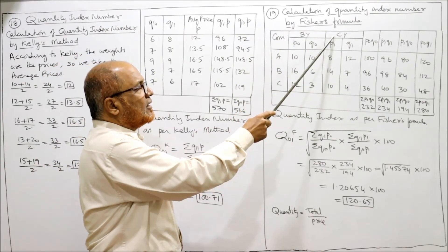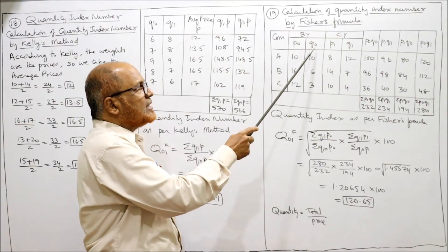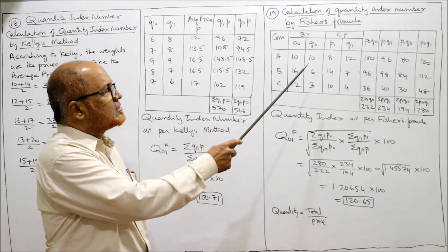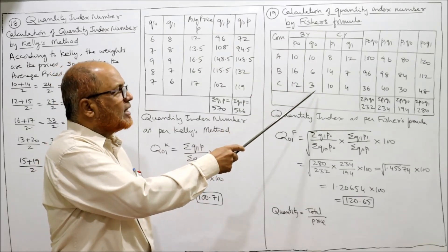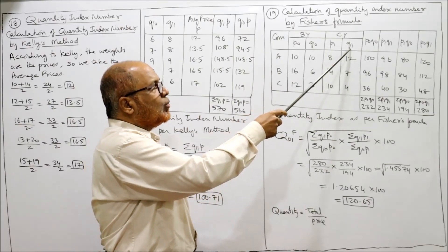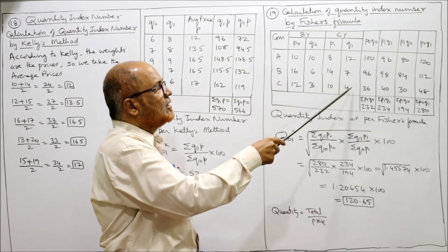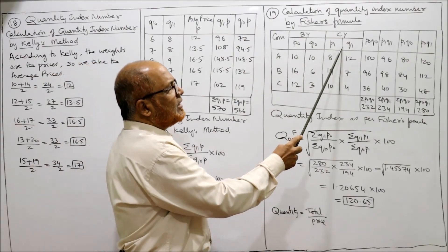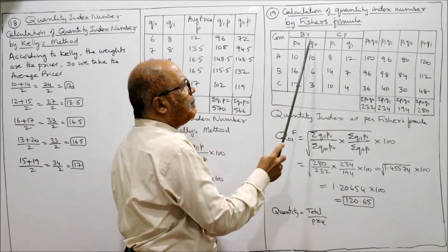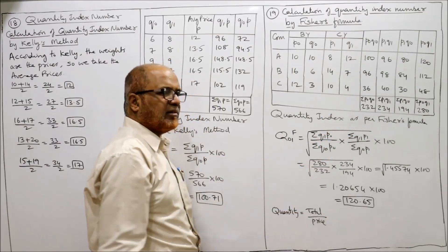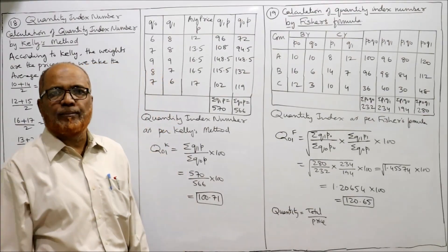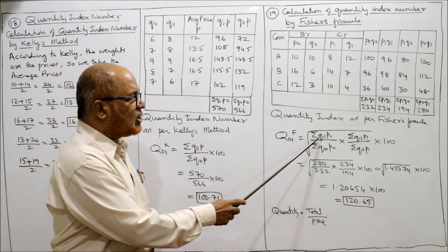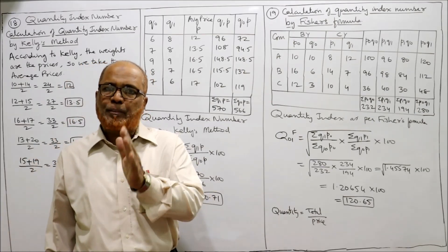Calculation of quantity index number by Fisher's formula. Commodities A, B, C — base year and current year. Base year price P0 is given as 10, 16, 12. Base year quantity Q0 is not given in the problem; we calculate it as total value divided by price. Current year P1 values are given but Q1 is not given — again calculated as total value divided by price. Then we open the four standard columns: P0Q0, P1Q1, P1Q0, and P0Q1, calculate the totals, and apply Fisher's quantity index formula: Q01(Fisher) = square root of [(ΣQ1P0 / ΣQ0P0) × (ΣQ1P1 / ΣQ0P1)] into 100 = 120.65.